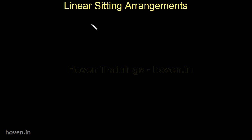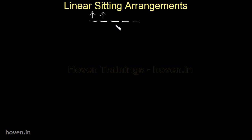We shall learn about linear sitting arrangements. In the case of linear sitting arrangements, persons are sitting in a horizontal row. They could be all facing one single direction, or some of them could be facing south direction and some could be facing north direction. So a mixture is also possible, or they could be facing the same direction.